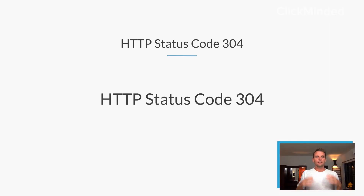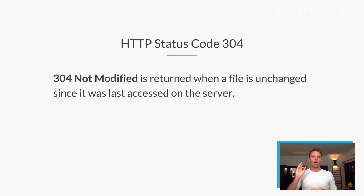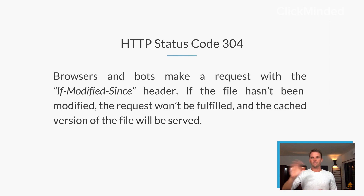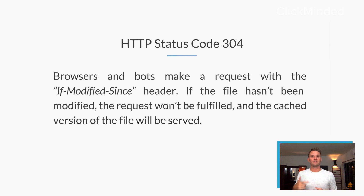HTTP Status Code 304 — the "Not Modified." A 304 Not Modified is returned whenever a file is unchanged since it was last accessed on the server. Browsers and bots make a request to the server, and it includes this "If-Modified-Since" header. So if the file hasn't been modified since then, the request is not fulfilled, and the cached version of the file is served instead.